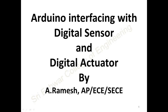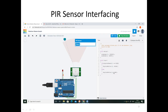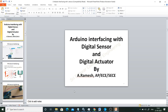Hi students, I am Ramesh, assistant professor, department of ECE. In this video I am going to explain about Arduino interfacing with a digital sensor and digital actuator. The digital sensor is a PIR sensor and the digital actuator is an LED, both interfaced with Arduino UNO. When a living thing is in the visibility of the PIR sensor, it gives logic 1 to Arduino UNO, which switches on the LED. When out of visibility, the PIR sensor gives logic 0 and Arduino switches off the LED.